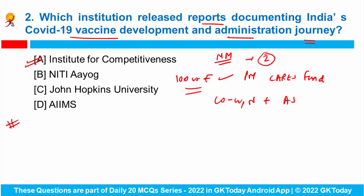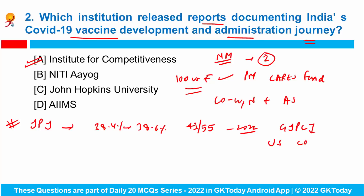Apart from it, India has improved its overall intellectual property index score from 38.4% to 38.6%, and the country is ranked 43rd among 55 countries on the International Intellectual Property Index 2022. This index was released by the Global Innovation Policy Center of the US Chamber of Commerce. The top five countries were USA, UK, Germany, Sweden, and France.